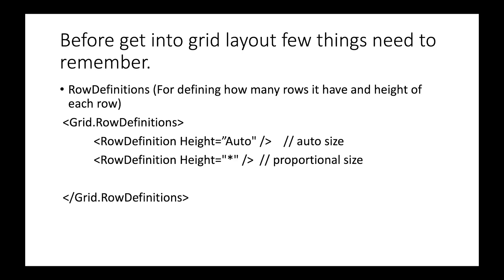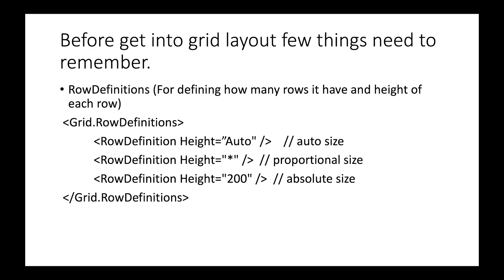The next row has a height of star, which is called proportional size — meaning all available space belongs to that row. The third row has a value of 200, which is called absolute size. This size will always be 200 regardless of the screen. That covers our row definition.